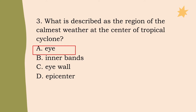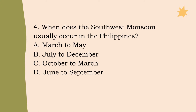Number 4: When does the southwest monsoon usually occur in the Philippines? Letter A: March to May, Letter B: July to December, Letter C: October to March, or Letter D: June to September? The correct answer is Letter D, June to September.